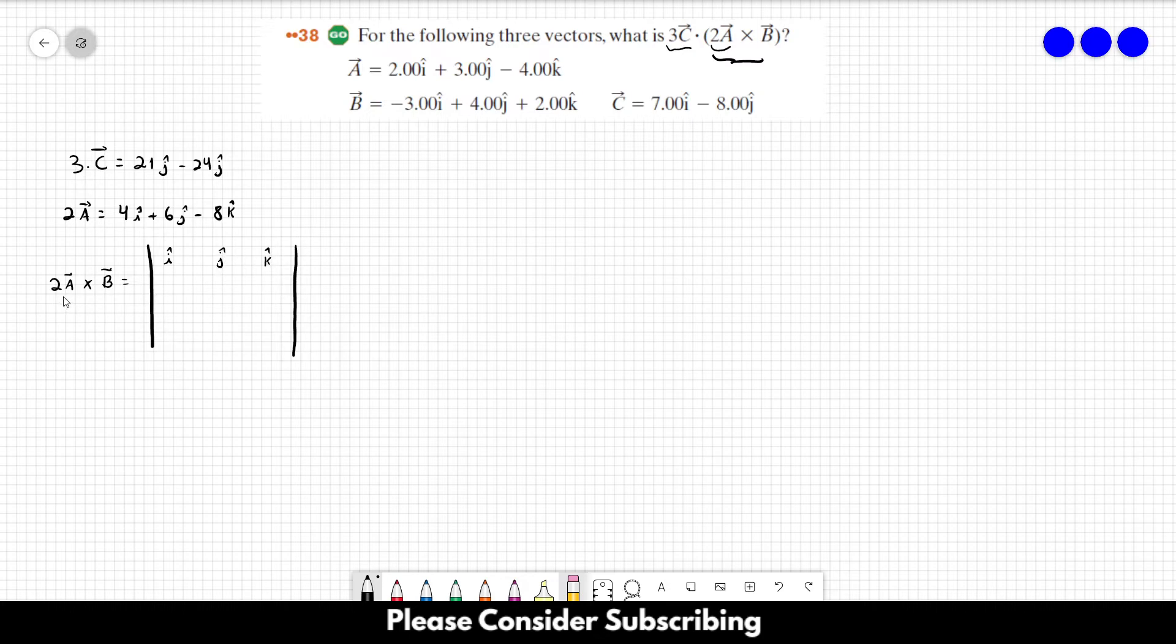The second row is the first vector that appears, which is this one over here: 4, 6, and minus 8. And the third row is the second vector, which is vector B: minus 3, 4, and 2.